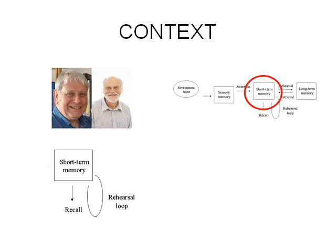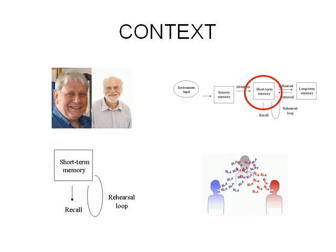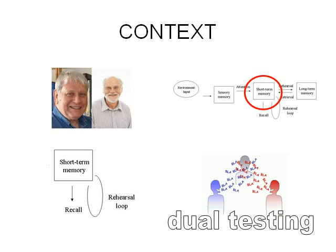Baddeley and Hitch pointed out that short-term memory seems to be more complicated than that. Here's a little diagram showing something known as the cocktail party effect. At a cocktail party, the cocktail party effect happens when two people on either side of you are both talking to you and your mind becomes overloaded — you can't make sense of what they're both saying at once. A number of psychologists have done research into this effect involving dual testing.